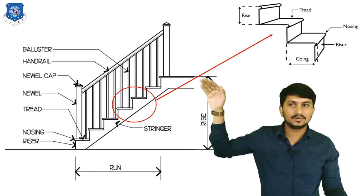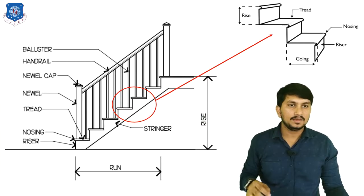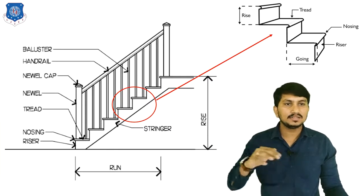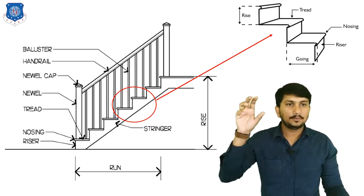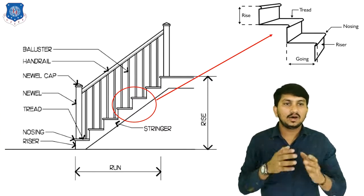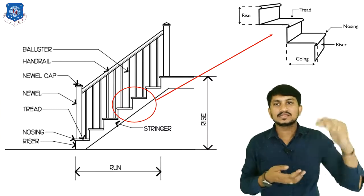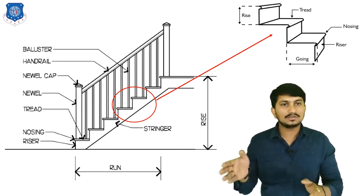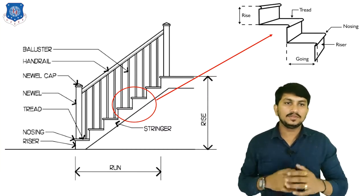Where the flight ends at the upper floor is also called LANDING. Here are the two main components of steps: tread and riser. Tread is the horizontal member where we place our foot. For supporting the tread, riser is provided. Going is the horizontal distance between two successive risers. Nosing is the outer projection or cantilever portion outside the tread, beyond the riser. It is the curved portion used for safety of the users.